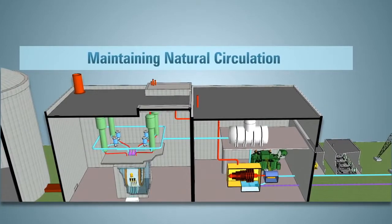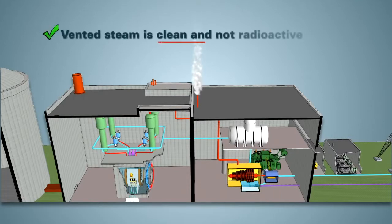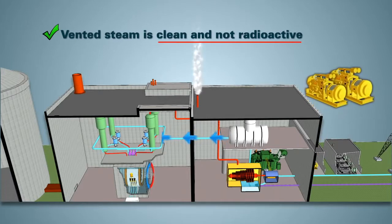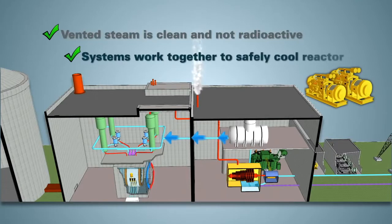At this point, to maintain natural circulation, pressure relief valves on the steam generator system open automatically to remove heat. The steam that is vented into the environment is clean and not radioactive. Water continues to be added in the steam generators by pumps powered by the emergency power generators. Together, the pressure relief valves and the added water maintain natural circulation to safely cool the reactor.